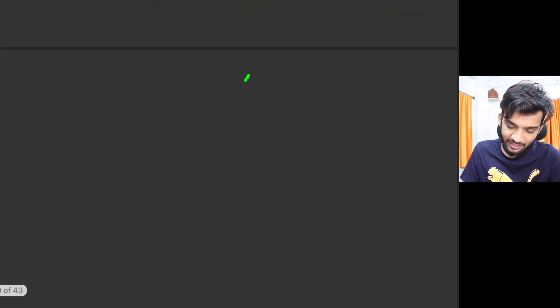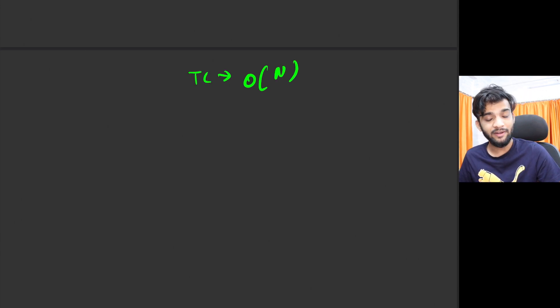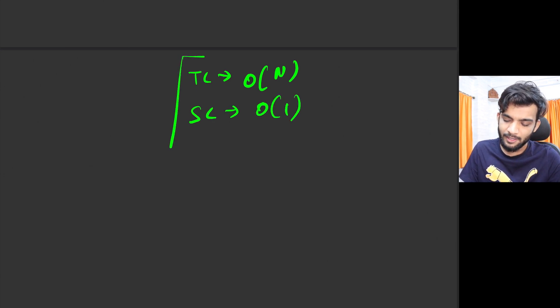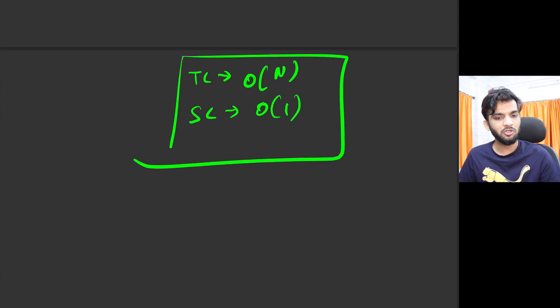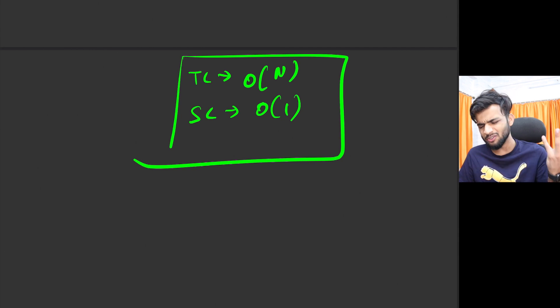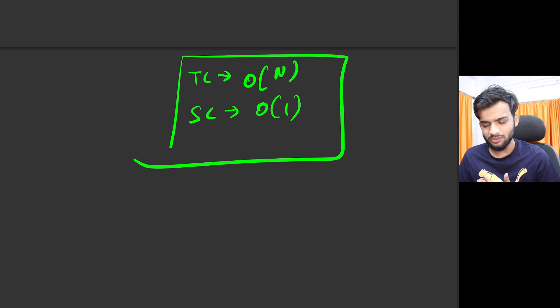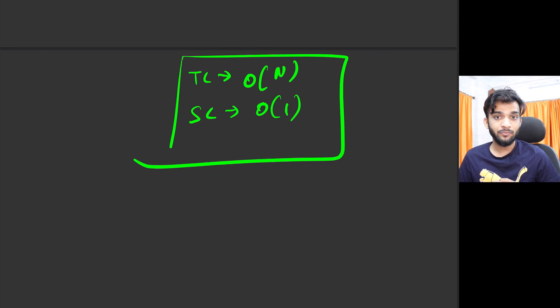Since we are doing a post-order traversal, the time complexity is O(n). The space complexity, ignoring recursion stack, is O(1) — we use three variables but that's not a big concern.